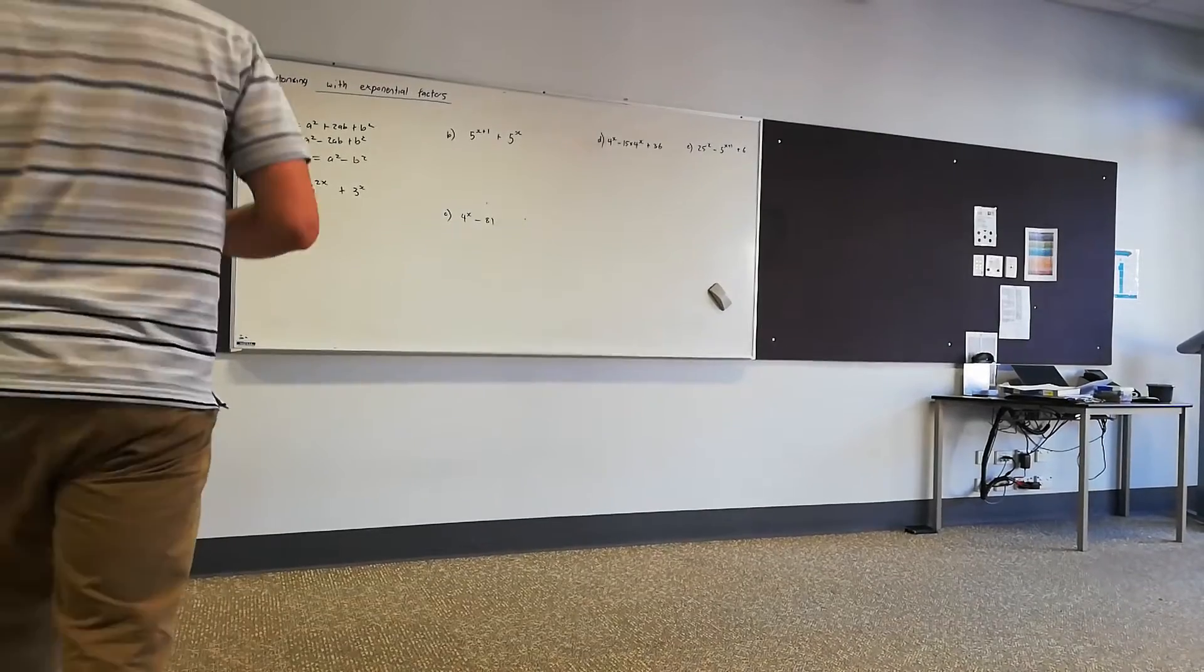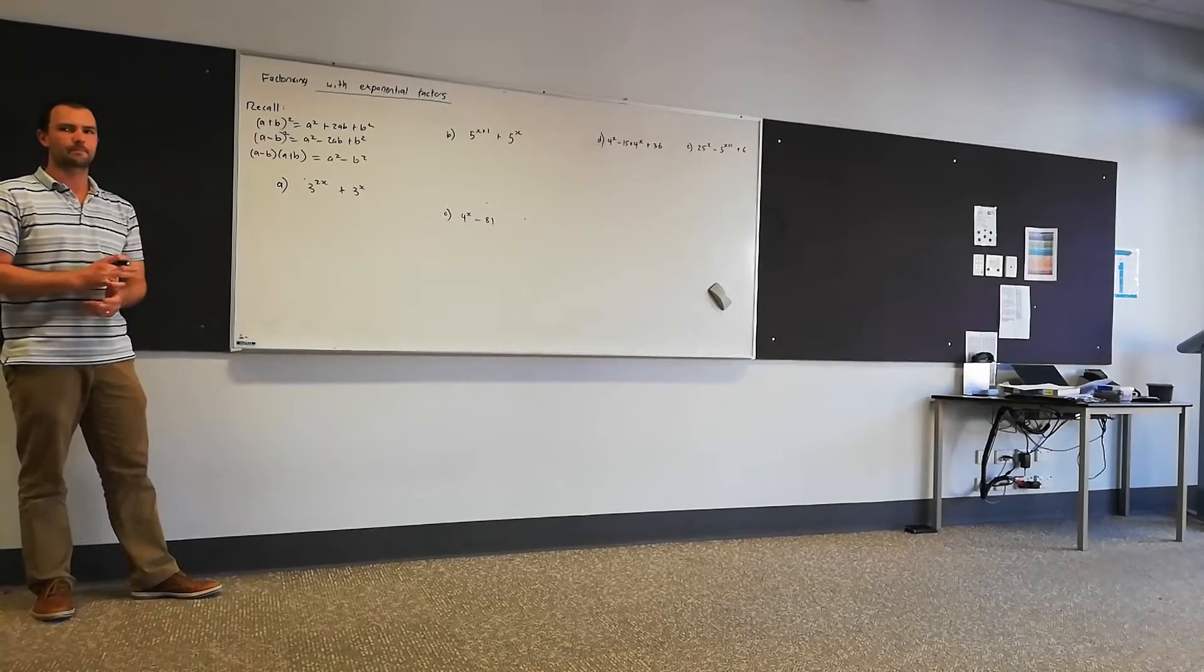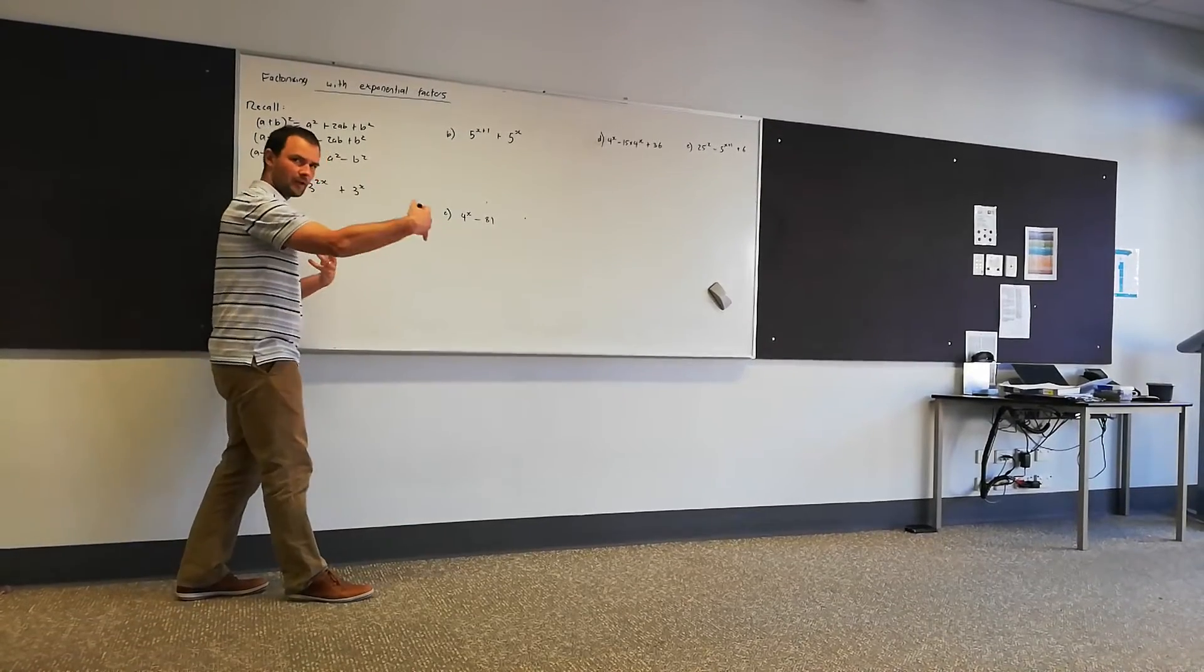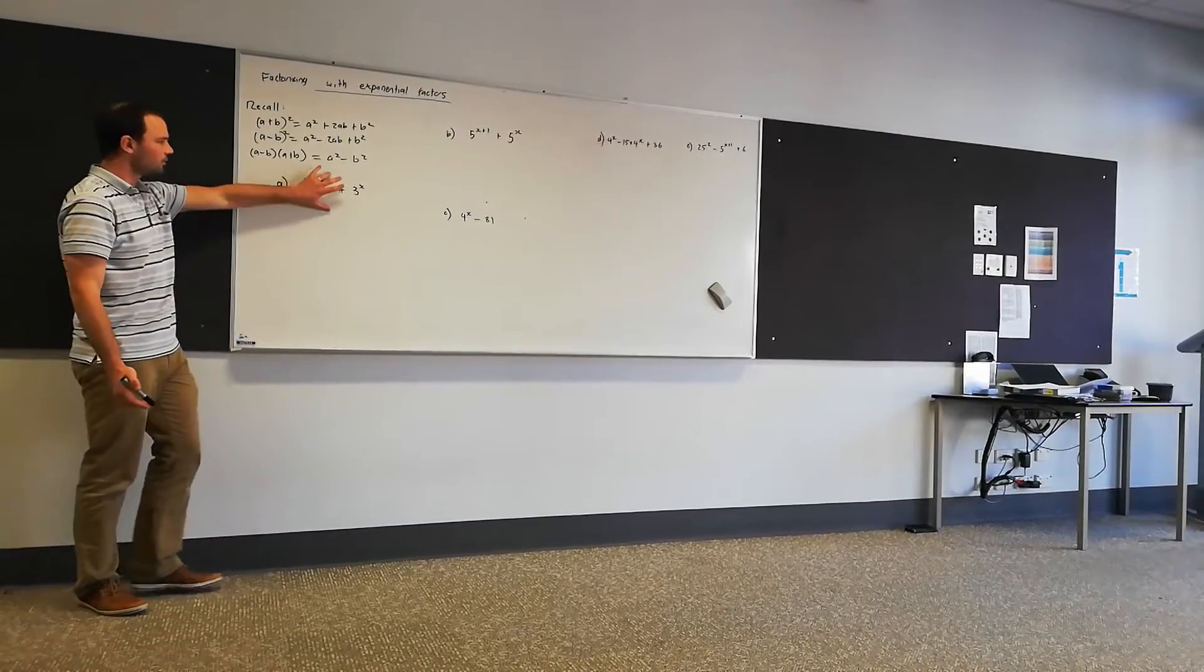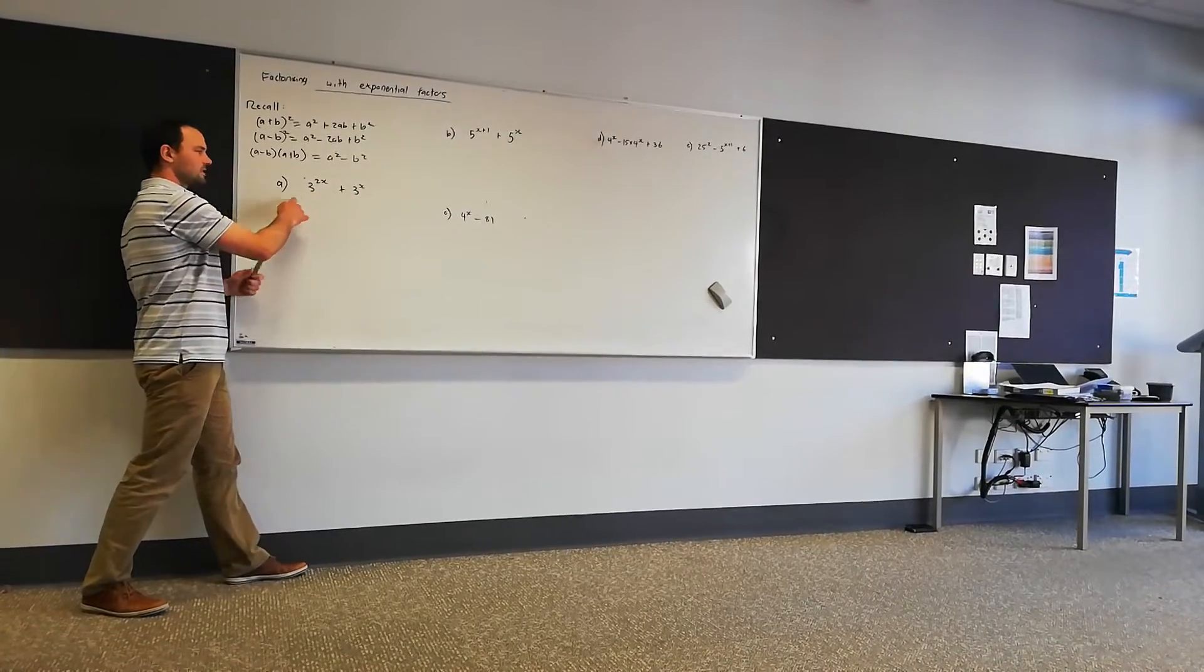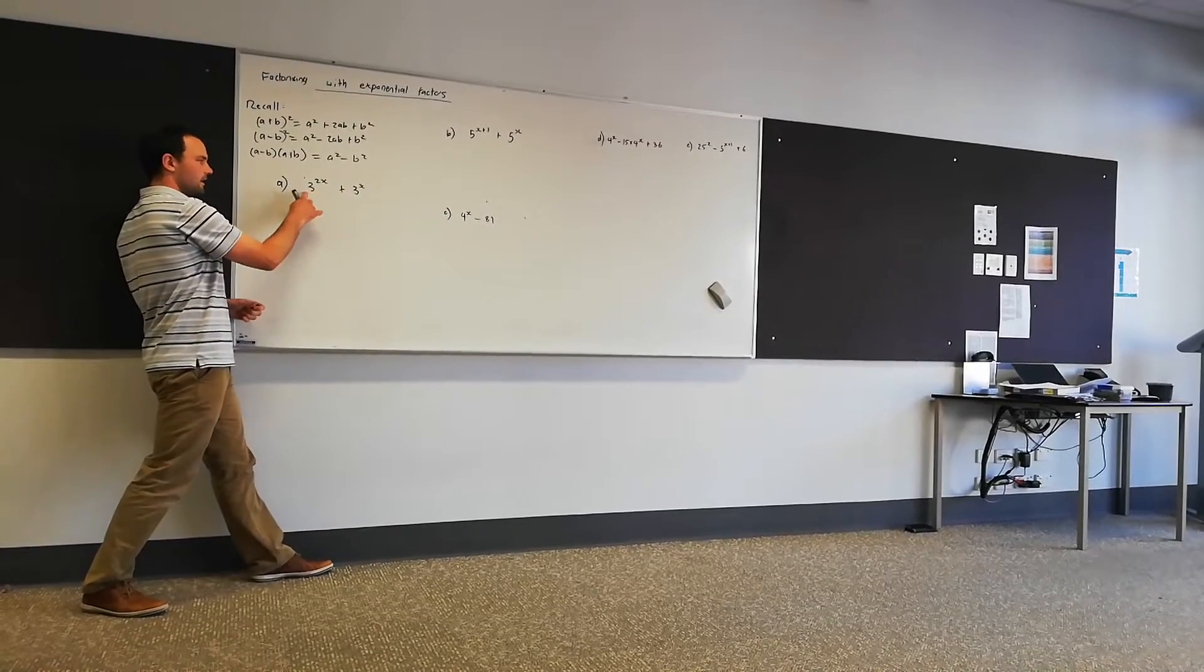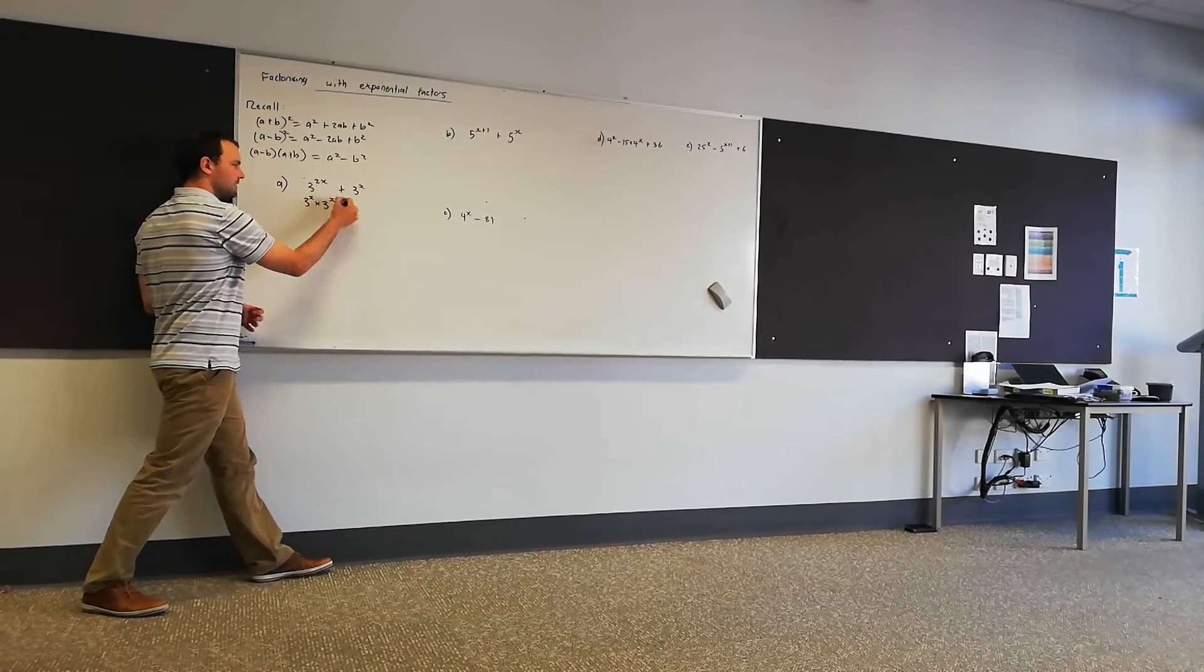Okay, so this is the opposite of expansion. What we're doing is we're looking for a common factor amongst all of our terms and we're going to pull that out the front. So here what we need to do is first we need to make a common factor. Now what we should be recognizing is our common factor is going to be 3^x, and we can express this as 3^x times 3^x.